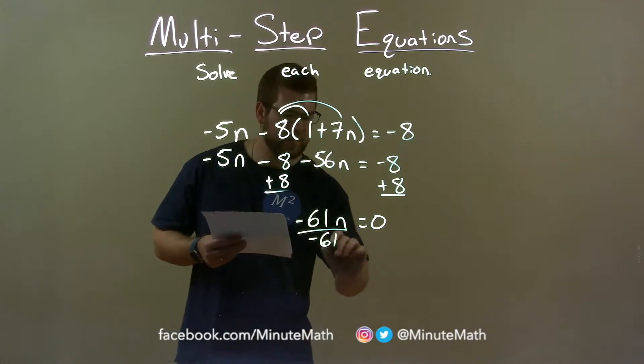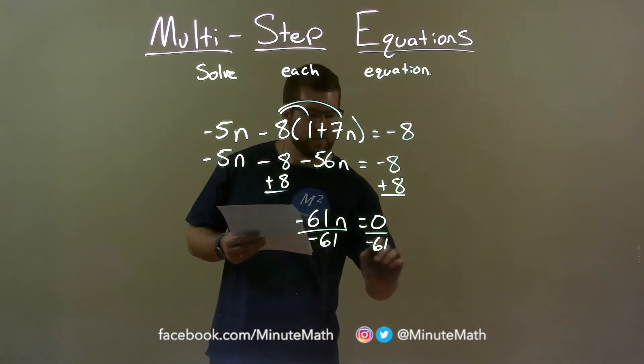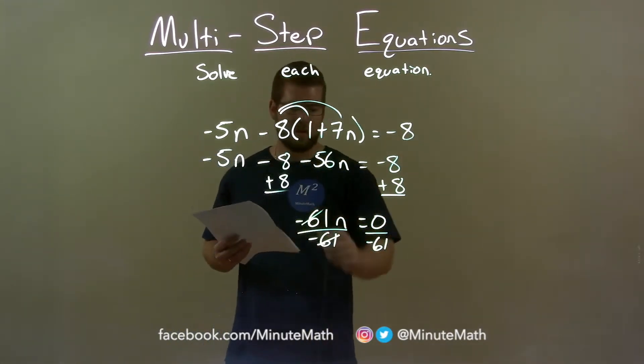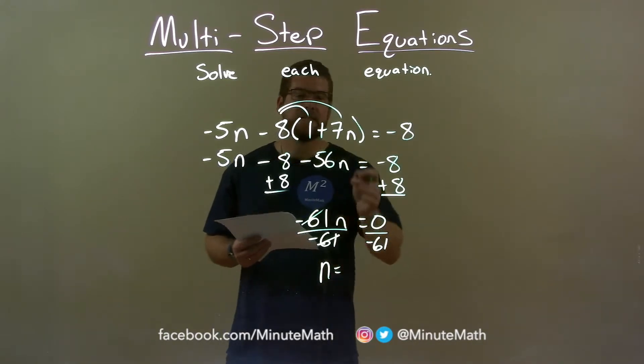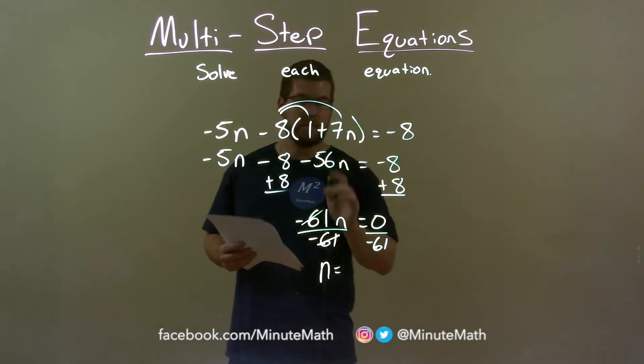Divide both sides by negative 61 and 61 is cancel on the left, giving me n by itself. And 0 divided by 61 is, be careful, 0.